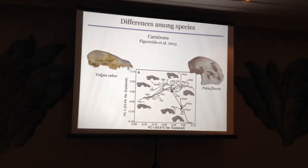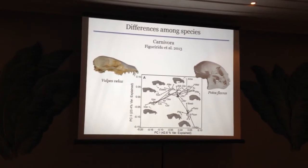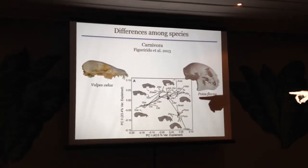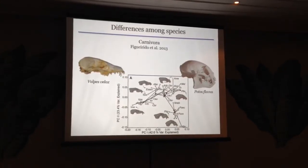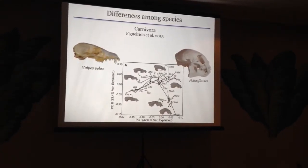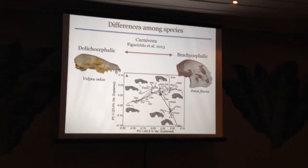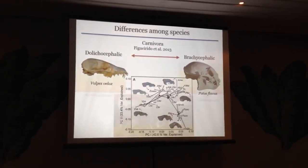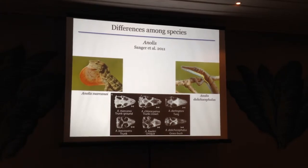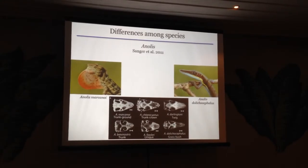This is a phylomorphospace of skull shape compared by Figueredo et al., showing variants from Vulpes velox over here — this is the Vulpes velox skull — to Protophilaurus over here. You can see they represent extreme versions of carnivore skulls along PC1 on the x-axis, representing the variation from elongate dolichocephalic skulls to foreshortened brachycephalic skulls. It's true for other vertebrates as well. Here we have various annals, foreshortened on one end and elongate on the other — in fact, the name of one species is Enolus dolos because of that elongate head.